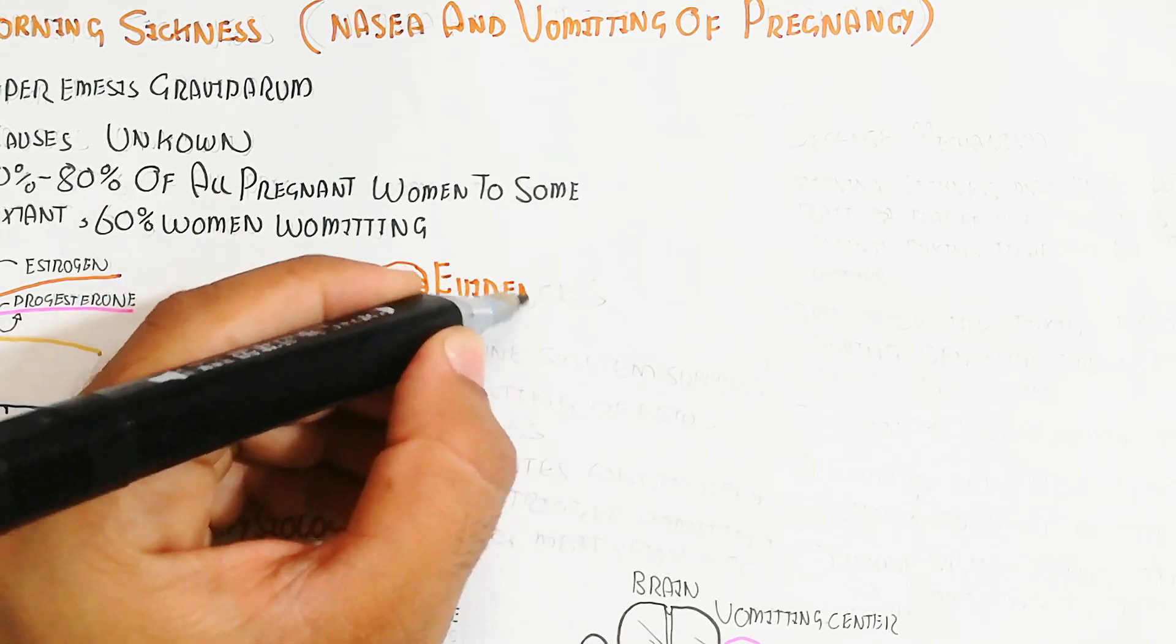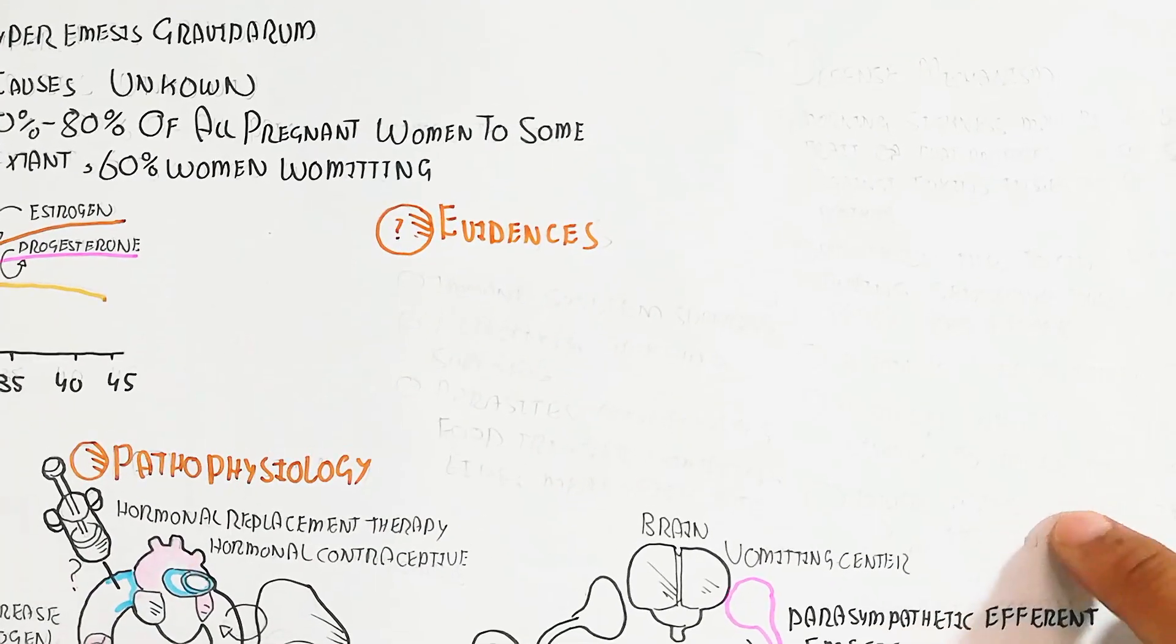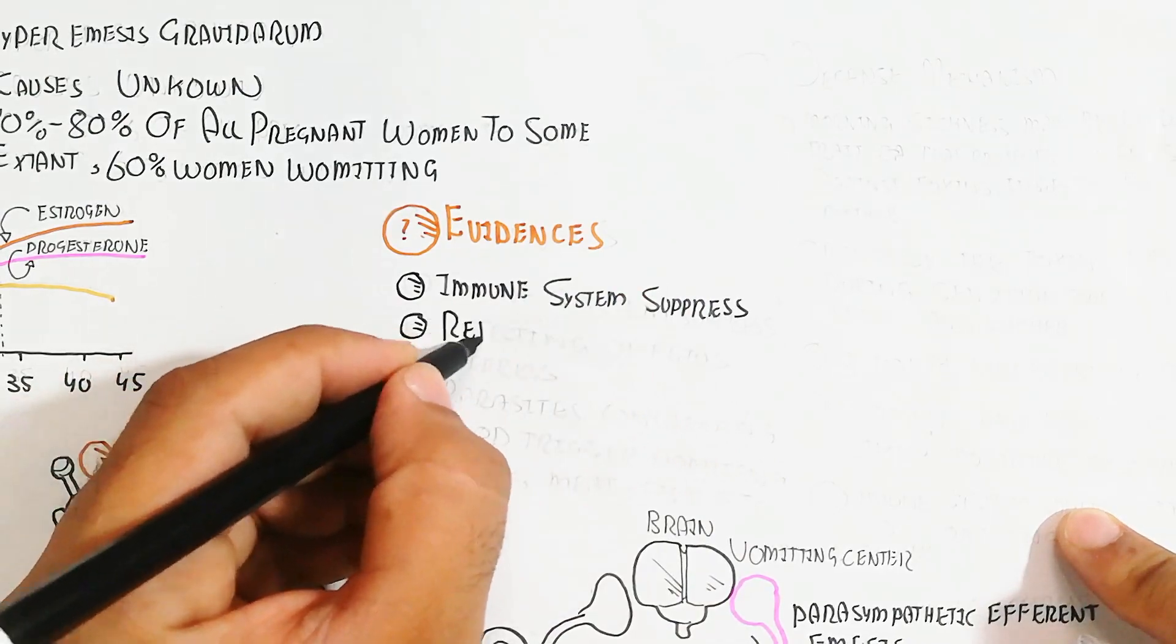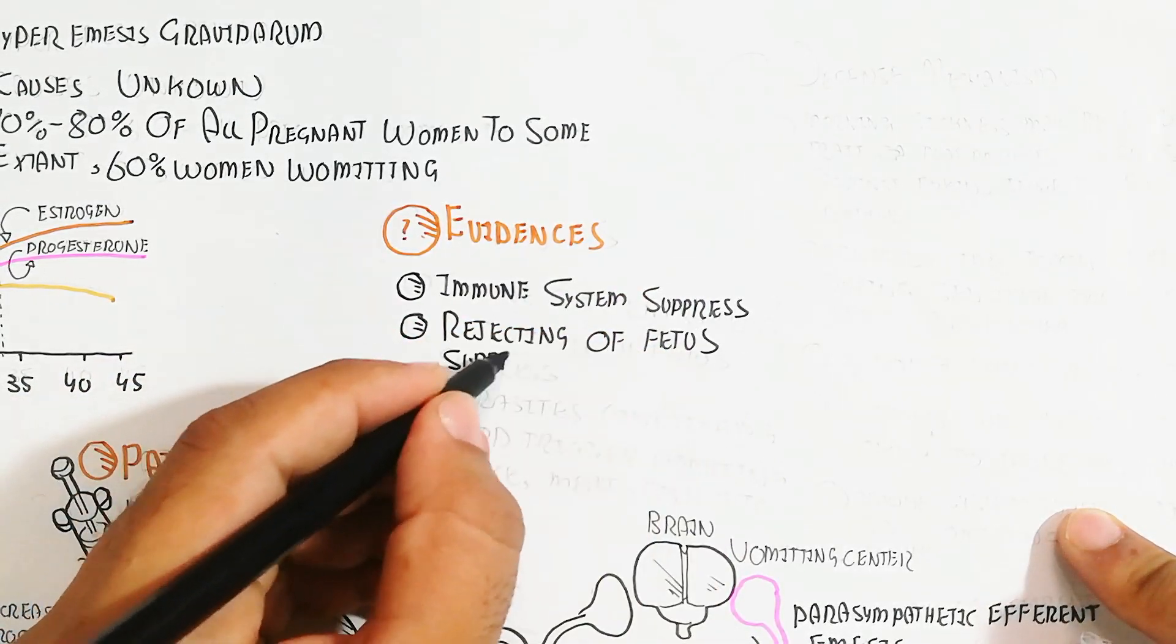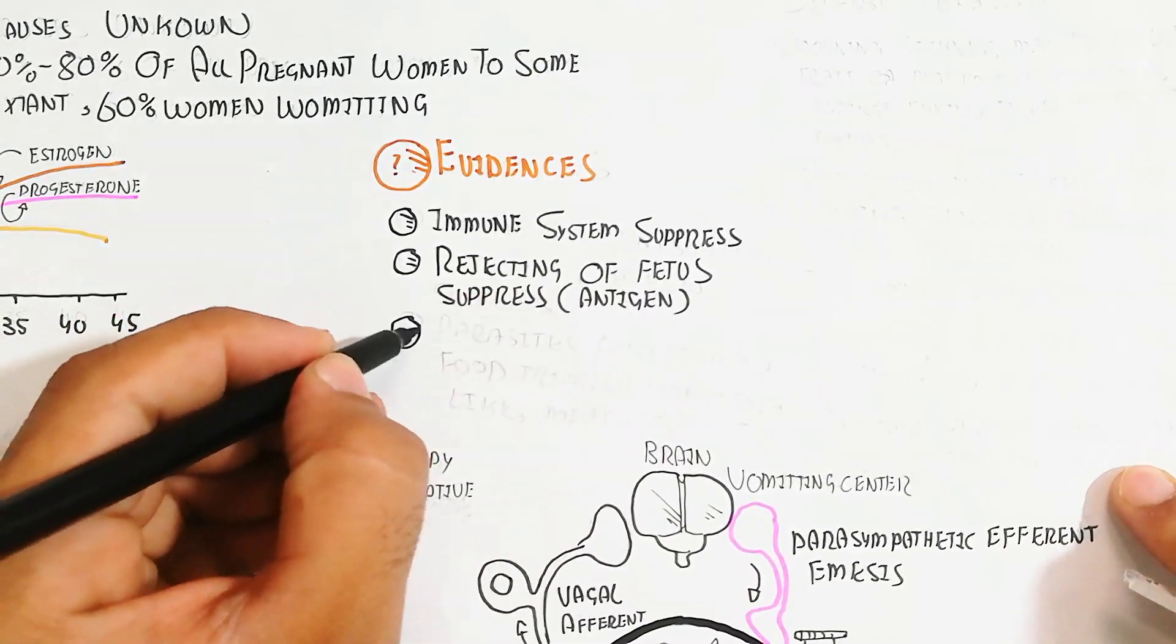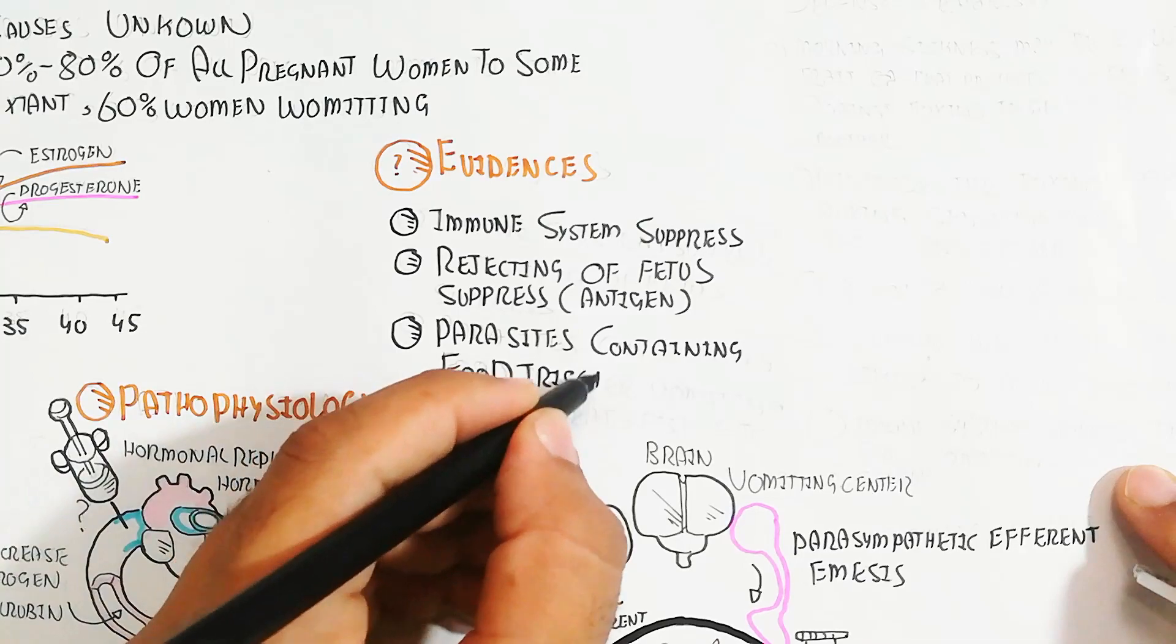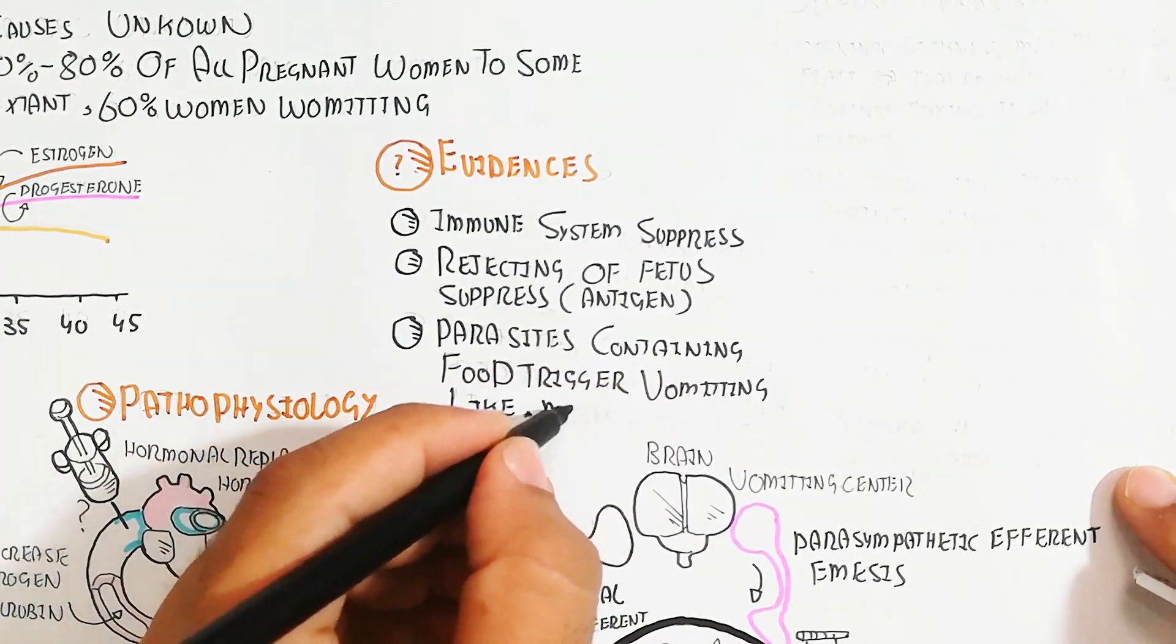The evidence of the emetic reflex due to morning sickness or hyperemesis gravidarum: immune system suppression and rejecting of fetus antigen is suppressed. Parasites containing food trigger vomiting like meat and fish, and in this way fetus development will be possible and inhibit miscarriage.